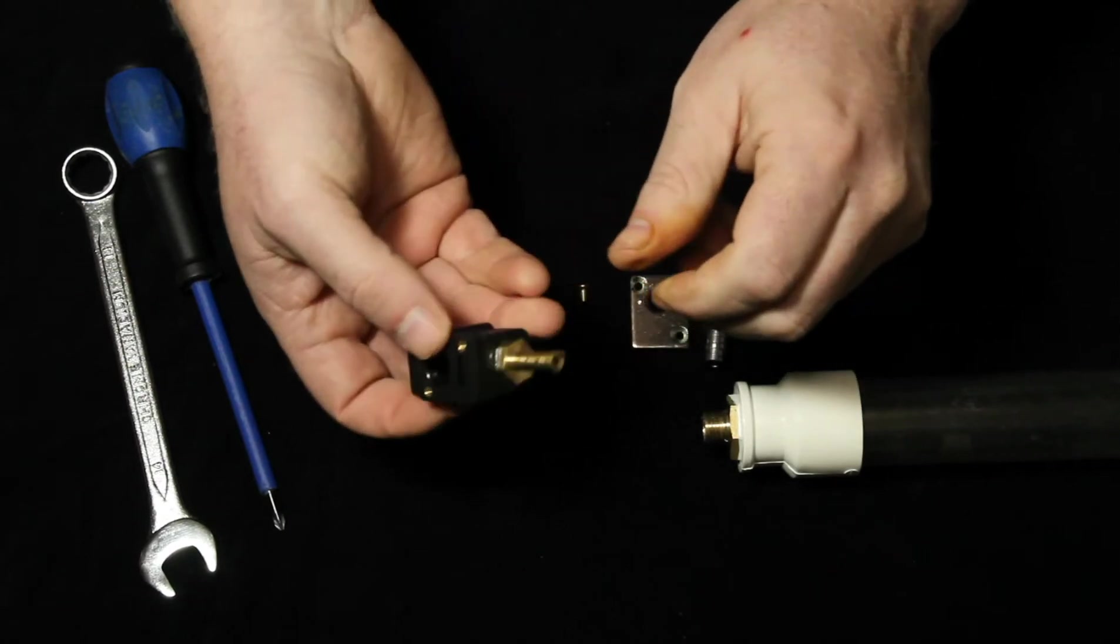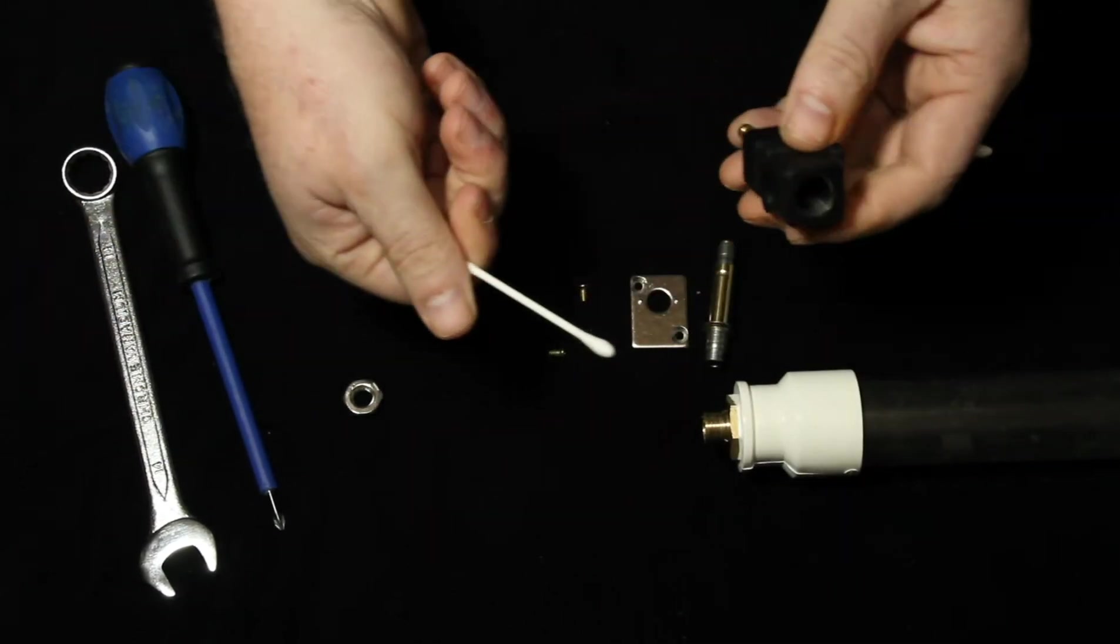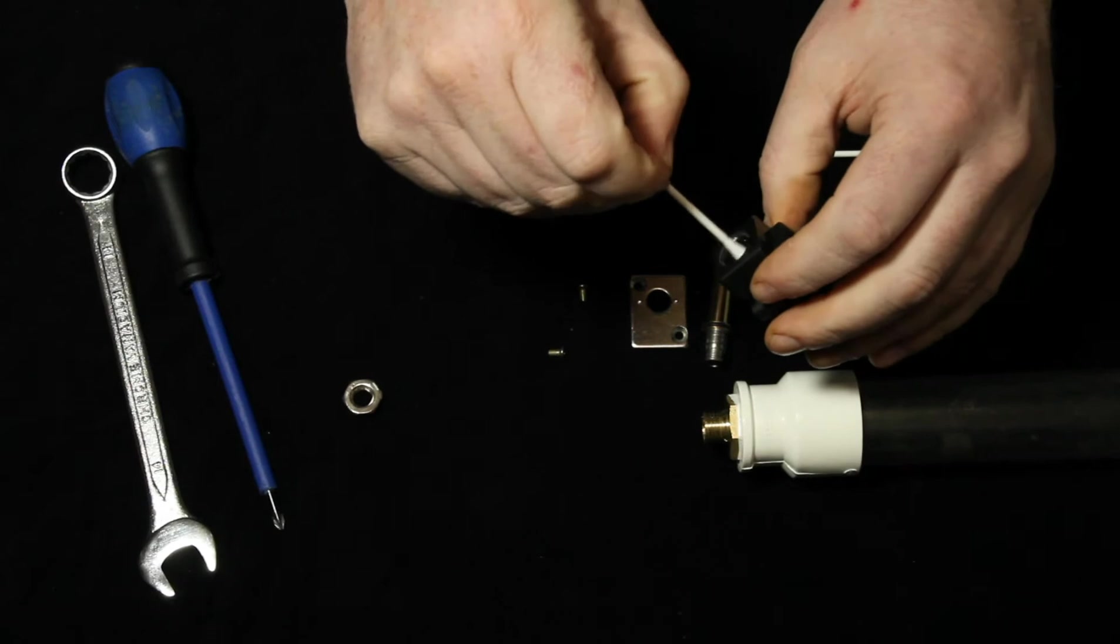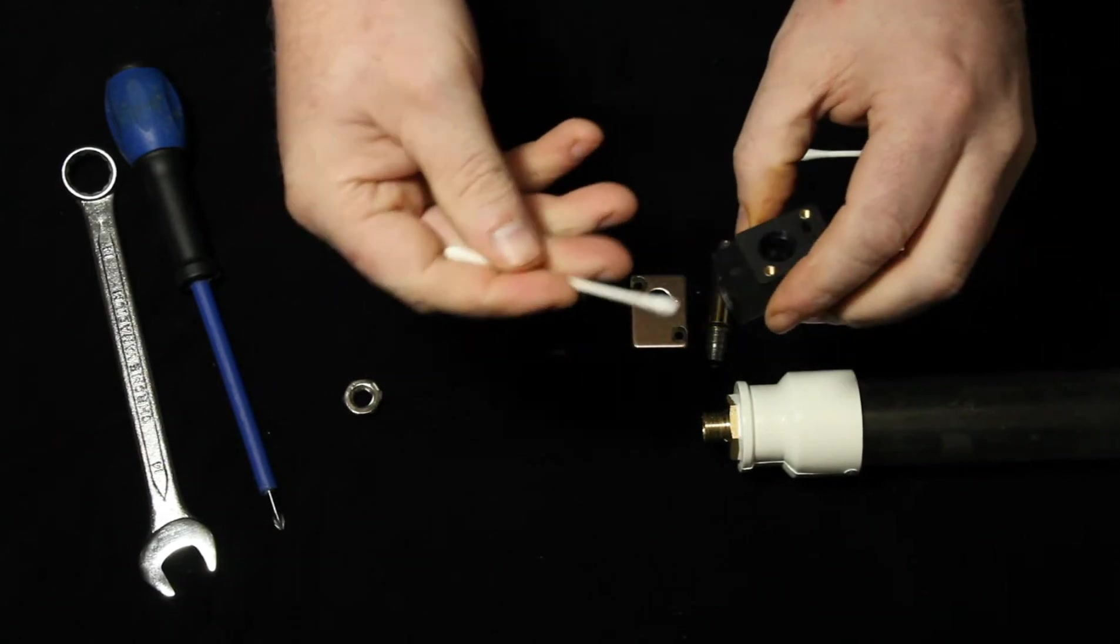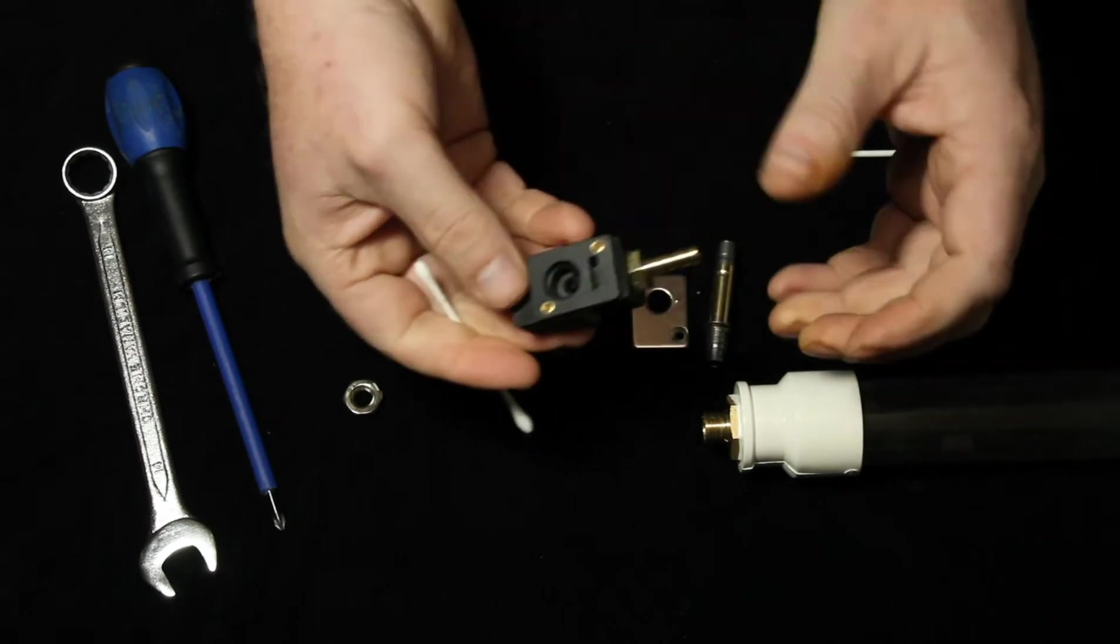If you get a Q-tip cotton bud, literally it's a matter of just getting them wet, wiping it around the inside, into the gap there, into the gaps in here, wiping it around and that cleans it up.